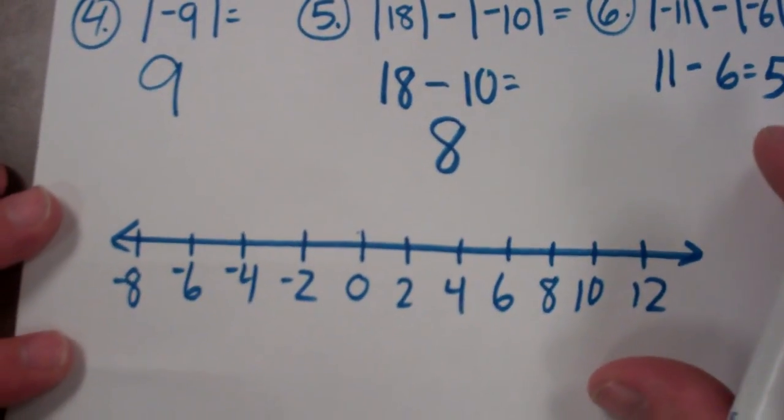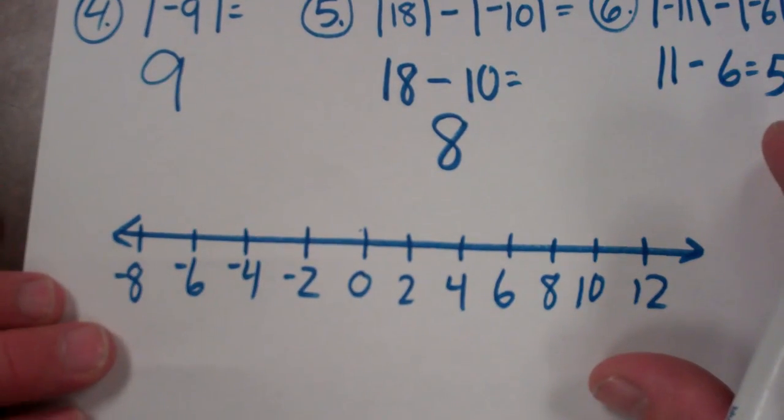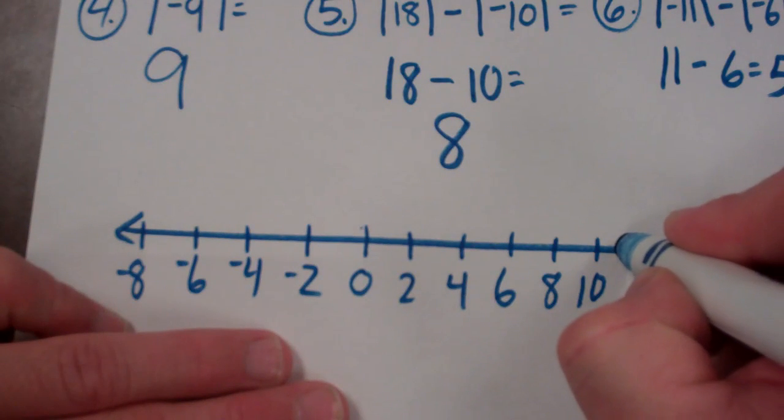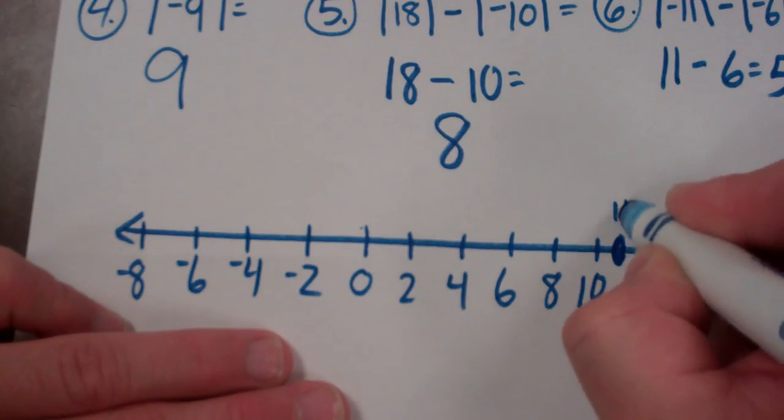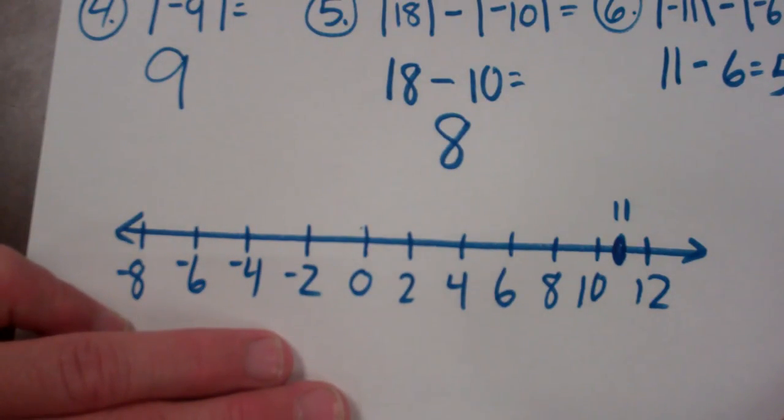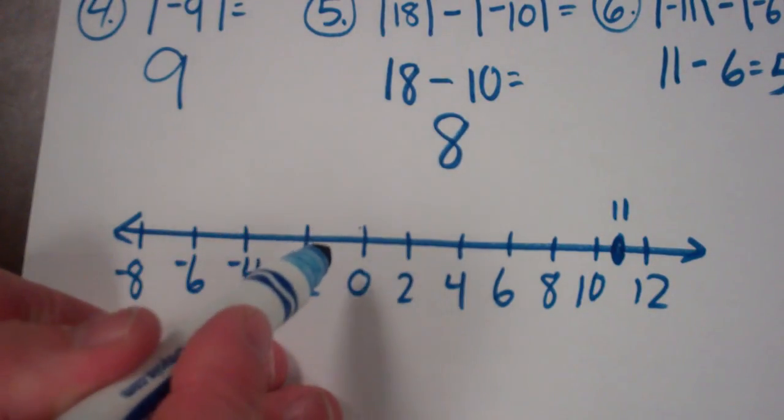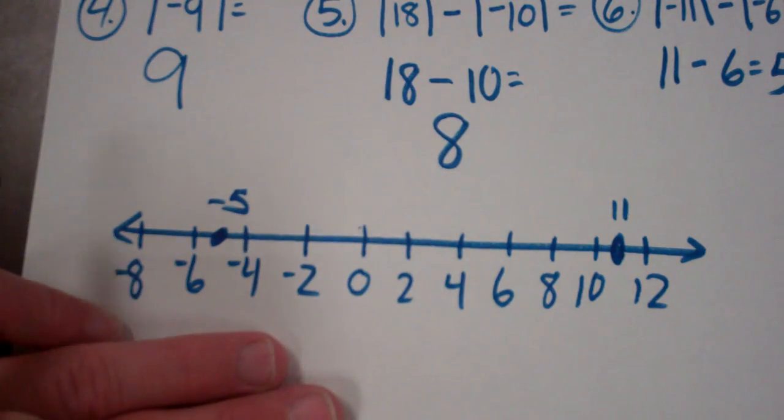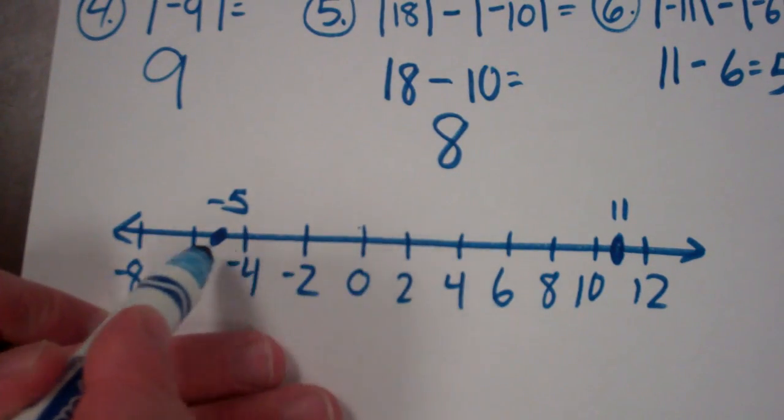All right. So number seven. Graph the set of integers. 11, negative 5, negative 8. 11 is a positive thing. We're counting by 2, so it would be right in the middle right there. There's 11. Negative 5. Negative 5 would be negative 2, negative 4. Negative 5 would be right there. And then negative 8. Negative 8 is in the negatives. Right there is negative 8.